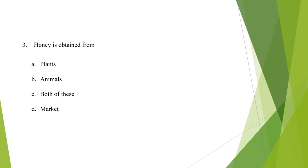Our third question is: honey is obtained from — A. Plants, B. Animals, C. Both of these, D. Market. The correct answer is Animals.